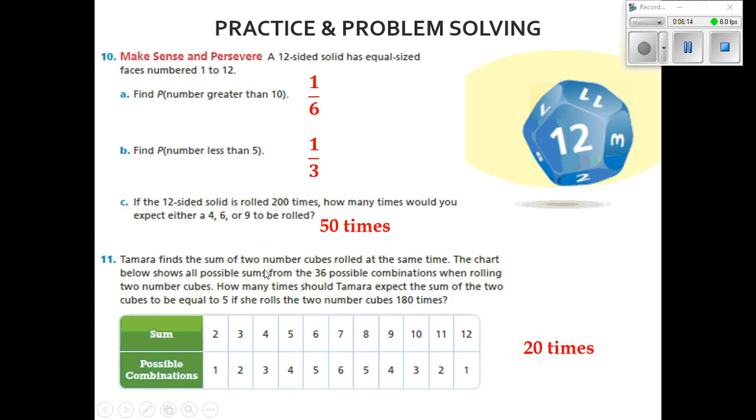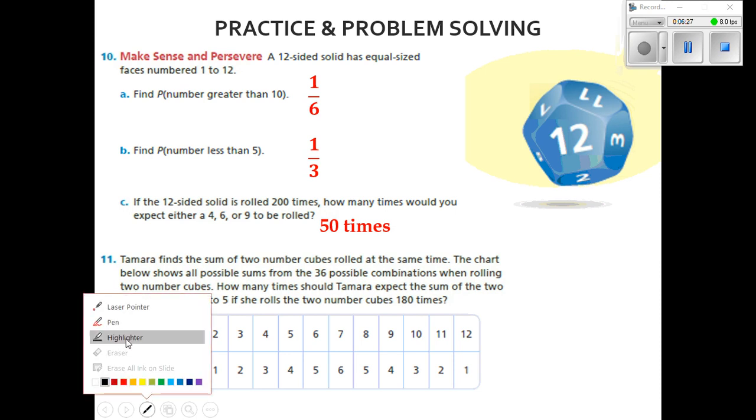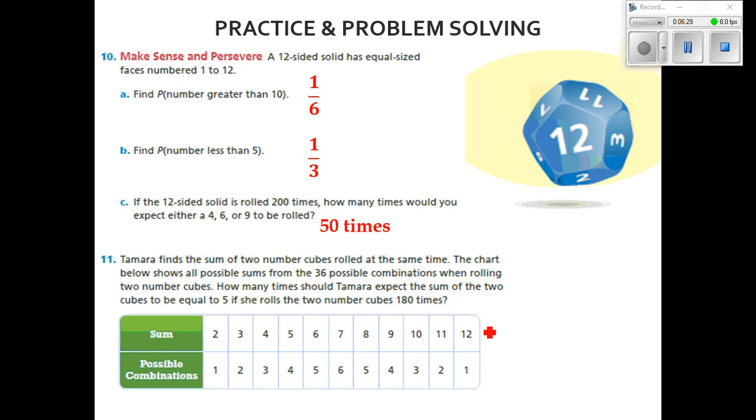Now for those that didn't understand it, let's do this. This could be solved by realizing that we're trying to get the number 5. We want the cubes to equal 5. How many different ways can it equal 5? Well, it says 4.